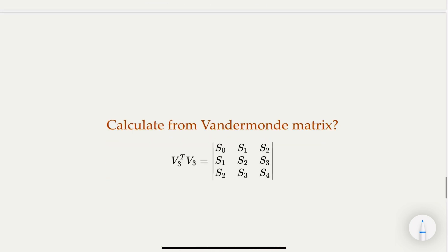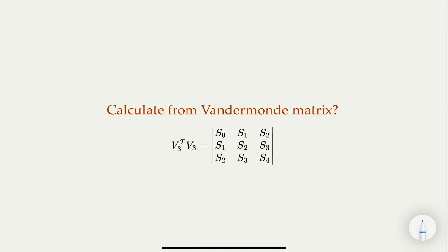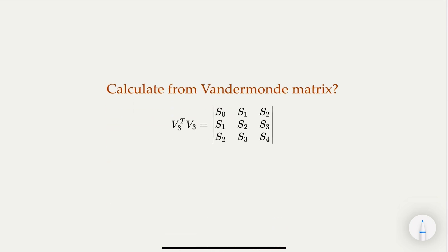So how do we calculate the determinant of the matrix? By definition for a 3 by 3 matrix, the determinant is the major diagonal, all positive terms. In other words, S_0 times S_2 times S_4, plus S_1 times S_3 times S_2, plus S_2 times S_1 times S_3.